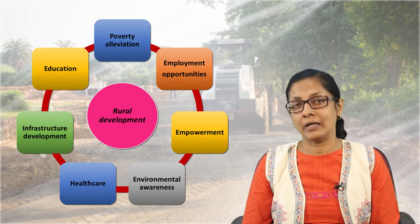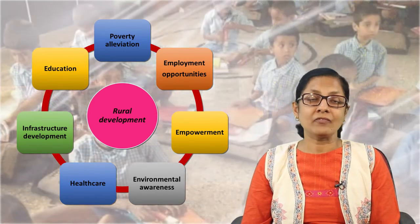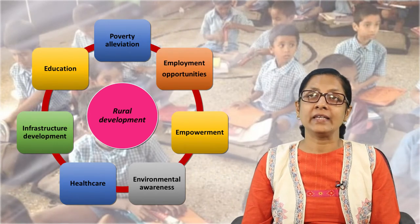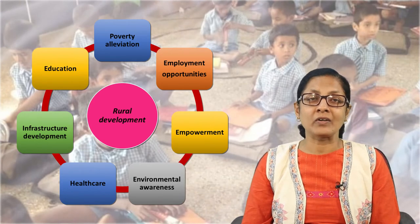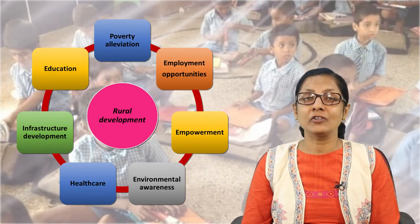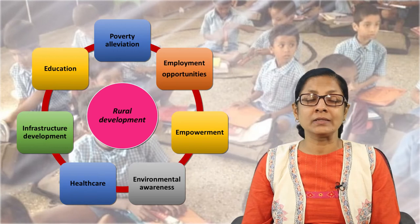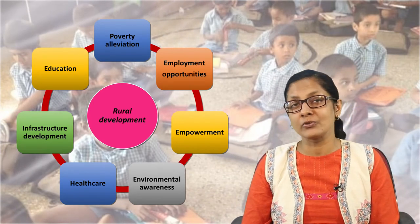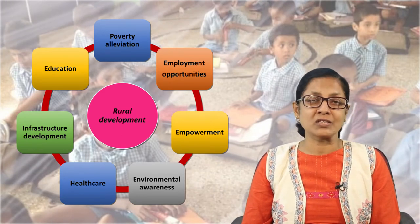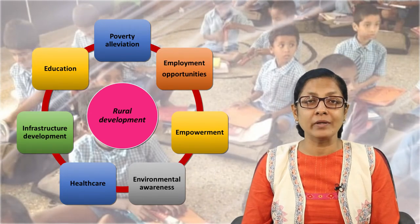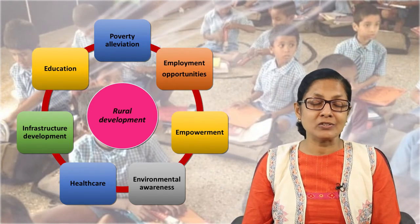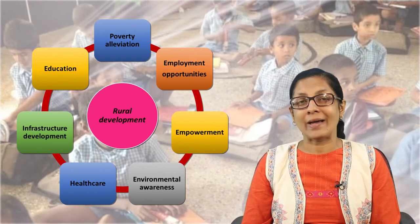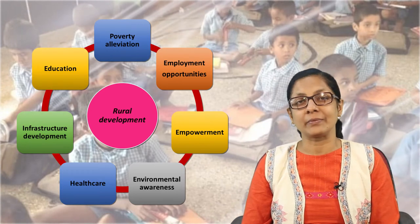One of the most important aspects — directly or indirectly related to every other area — is education. Education provides a set of skills to individuals. It helps in poverty alleviation, creates awareness about health care and environmental issues, and provides empowerment. If you have a pen in your hand, you are considered empowered, knowing how to read and write. Education also helps in employment. So everything is related to each other — if one aspect is addressed, the others are automatically covered.